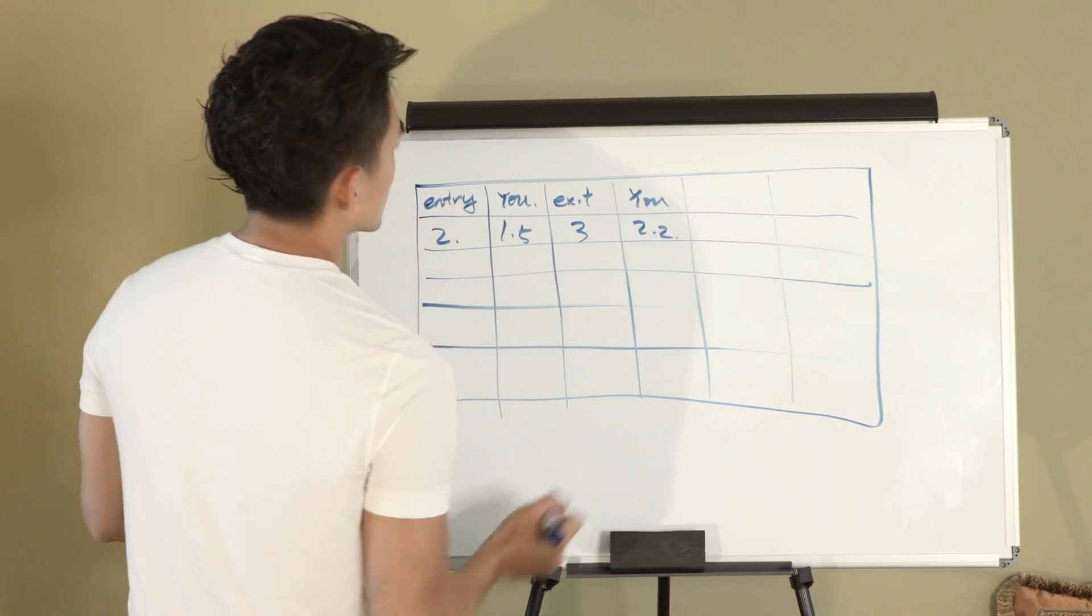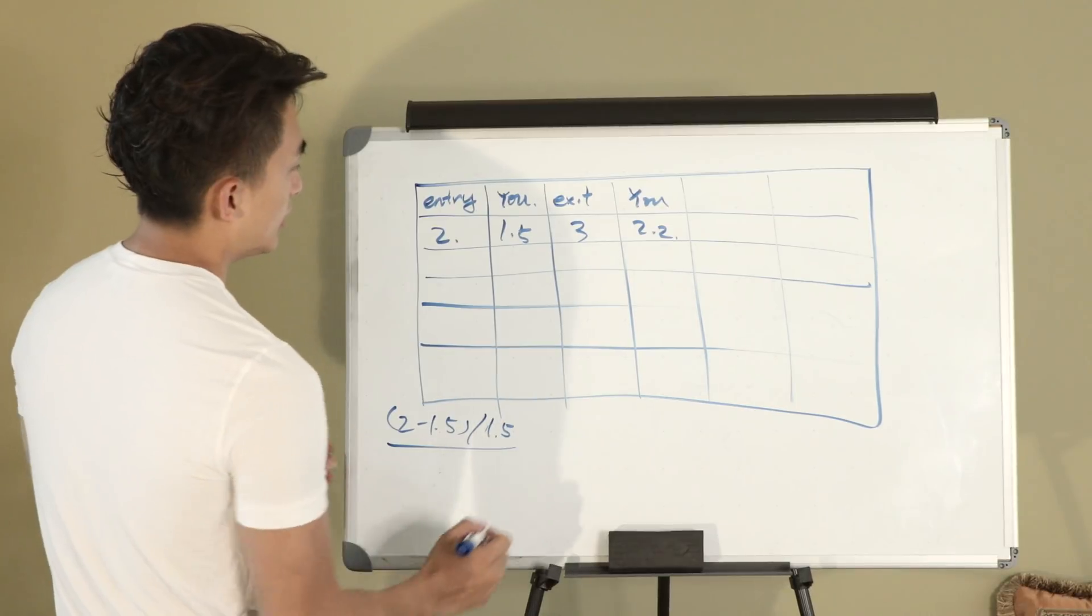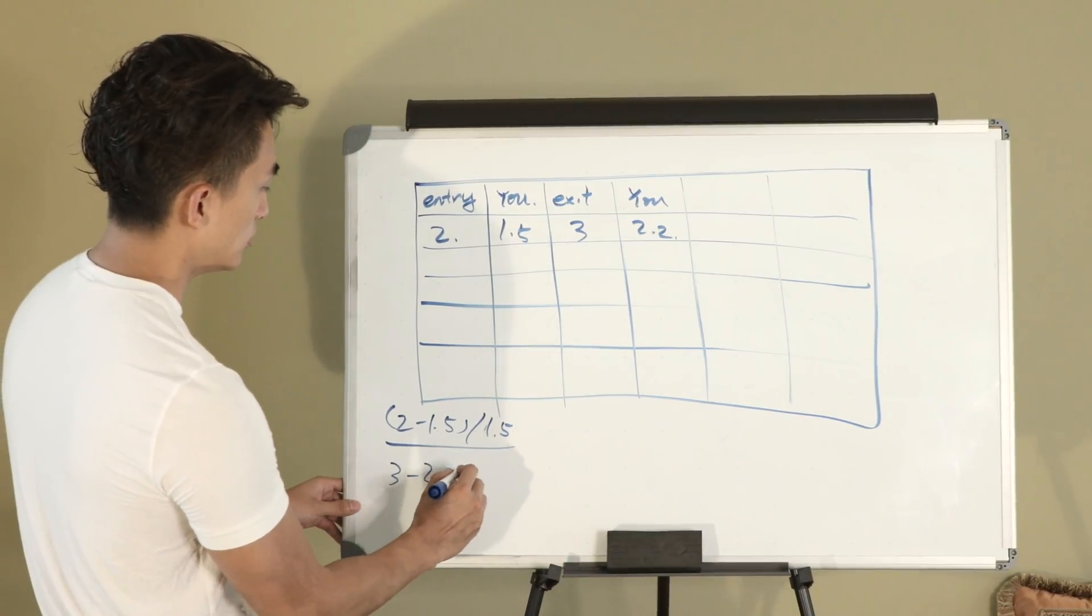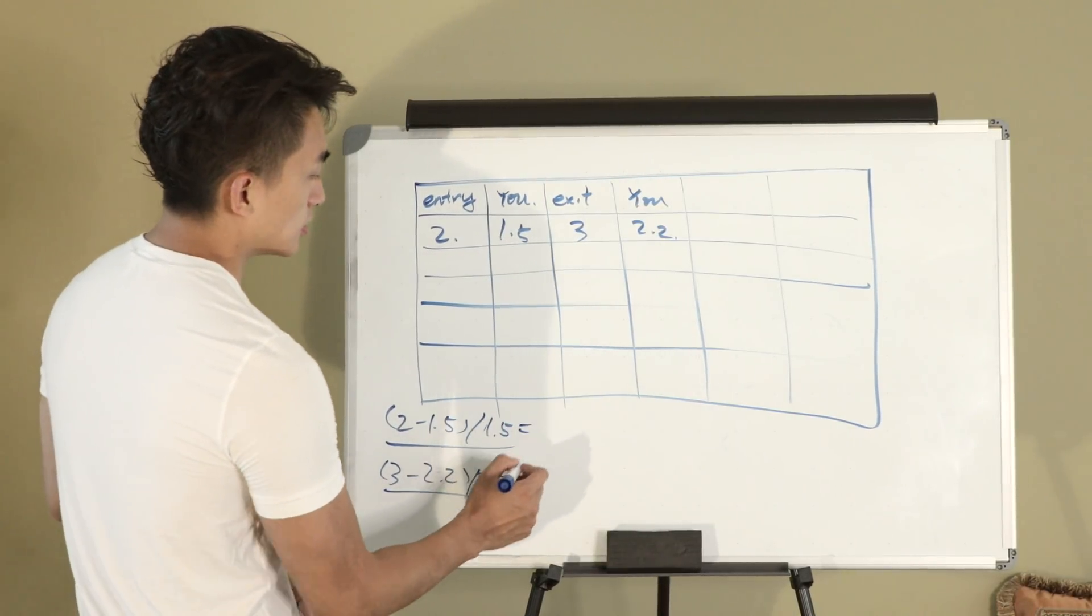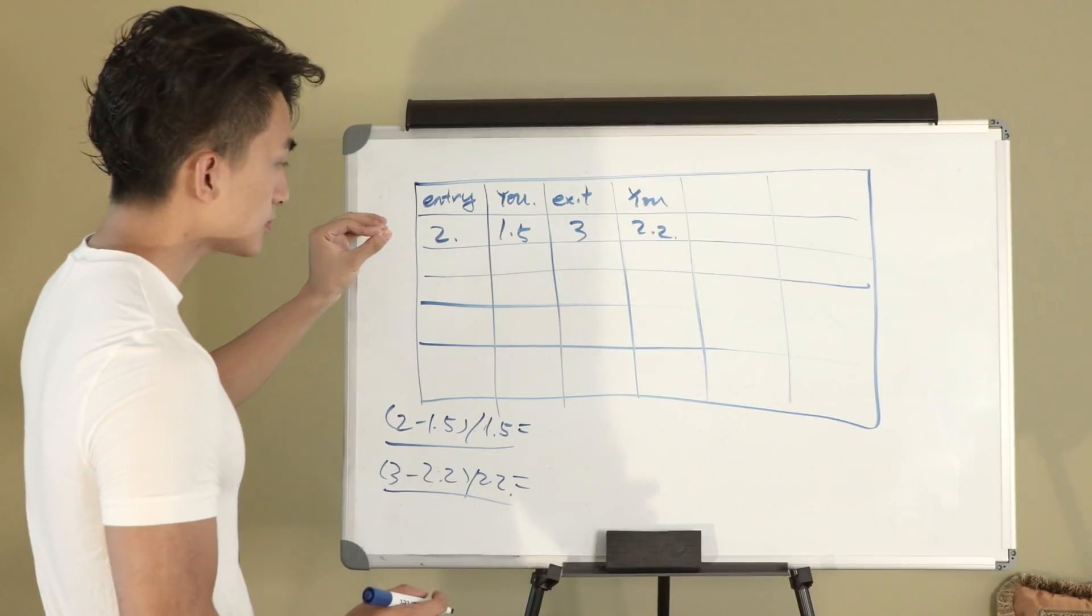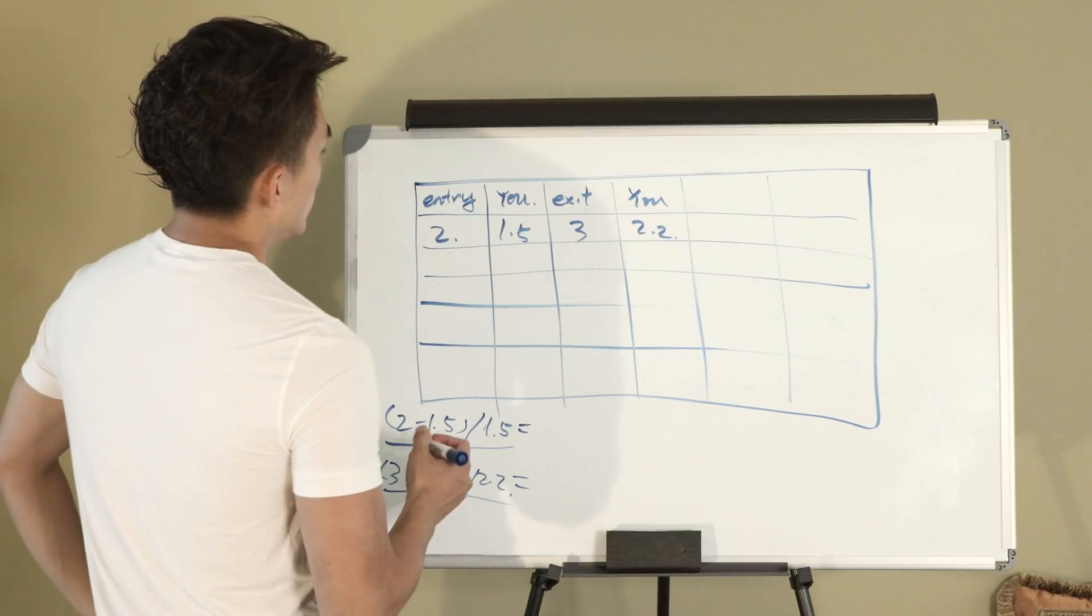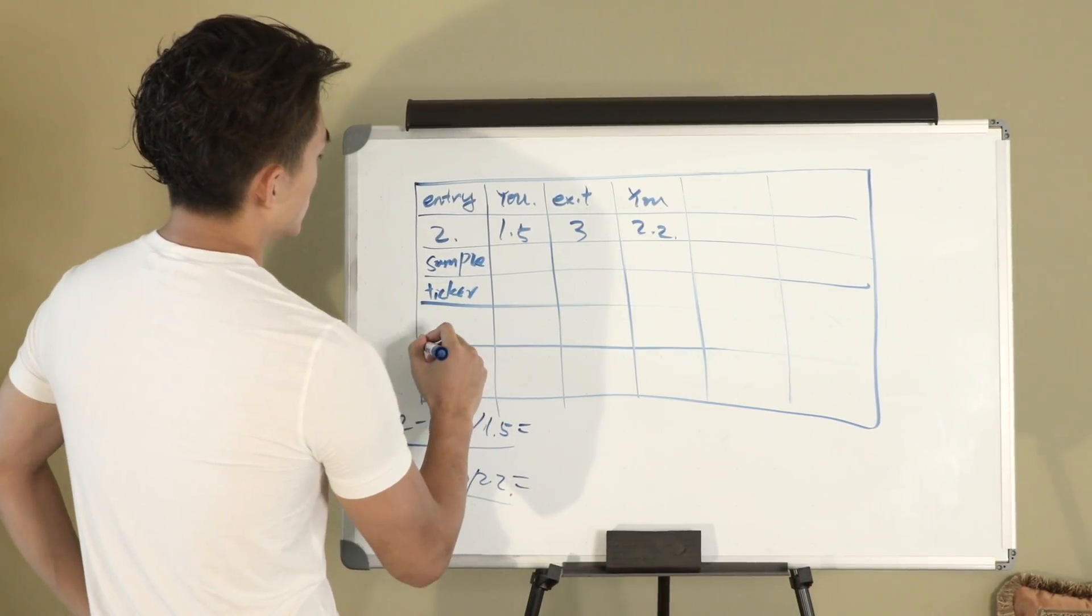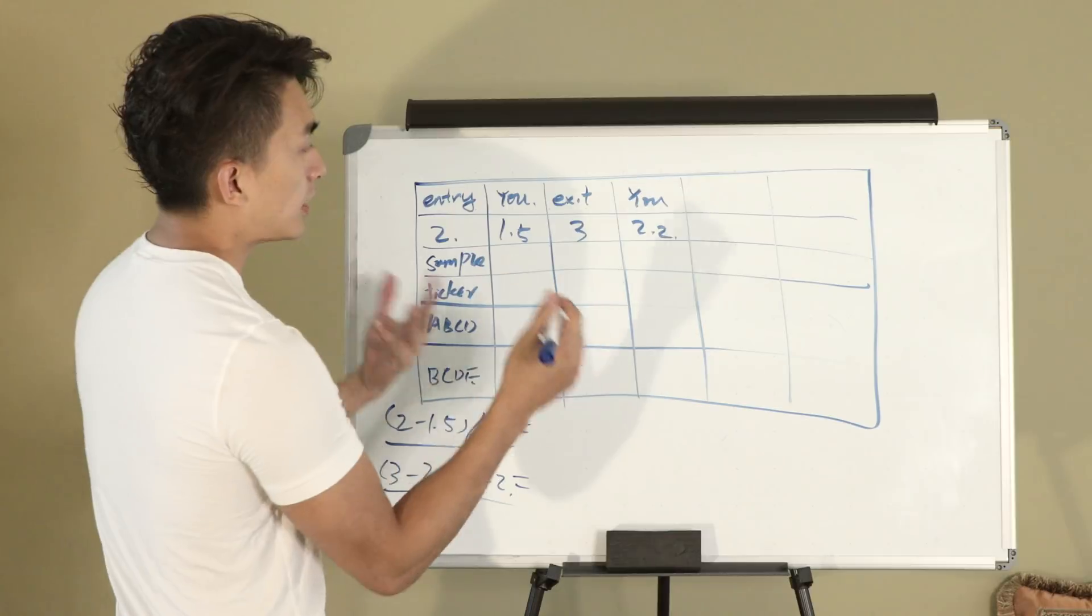You can use 2 minus 1.5 divided by 1.5. You can find that you are a certain percentage away from the perfect entry. Now you can use 3 minus 2.2 divided by 2.2. You can find your certain percentage from the perfect exit. Once you find the certain percentage, you can use this percentage to apply into any type of stocks that you are trading this specific pattern to get the best risk reward. Next what we want to track is samples and how many tickers it has. Let's say a, b, c, d, e. This row will be the tickers and once the pattern performs.